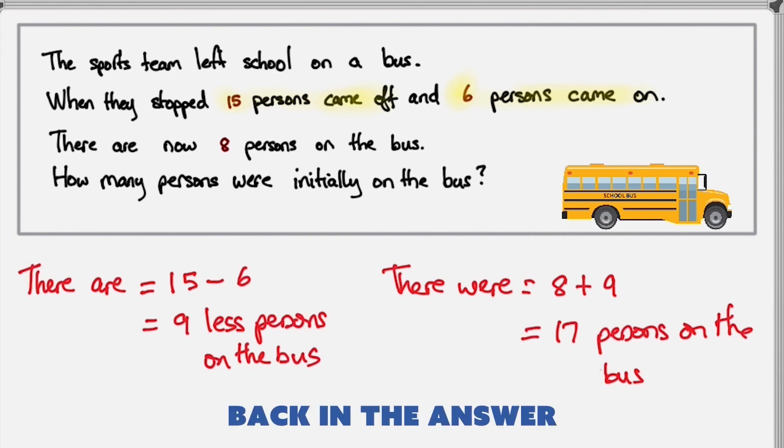An interesting thing that you can do in these questions is plug back in the answer into the question and make sure it works out. So there are initially 17 persons on the bus, that's what we found out. And 15 came off. If 15 came off, 17 minus 15 means that there are now 2 persons on the bus.